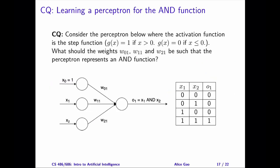Here's question number two. We have a perceptron with the step function as the activation function. What should the three weights be such that this perceptron represents the AND function? Pause the video and solve this yourself. Then keep watching for the answer.